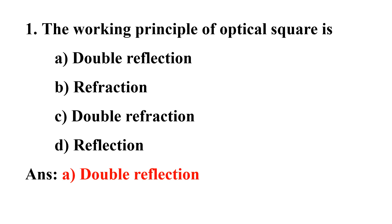How is double reflection formed? There are two mirrors placed at 45 degrees to each other. The first mirror is a horizontal glass, and the second mirror is a horizontal glass that is half-silvered.